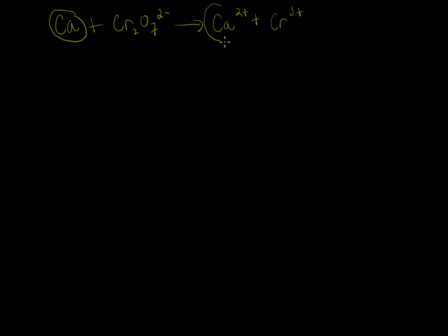It looks like calcium is going to produce calcium 2+ in this reaction. The other half reaction we have is dichromate—that's the whole chemical structure of this species here—being transformed to chromium 3+.